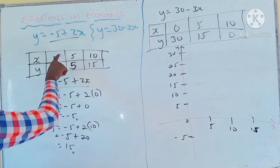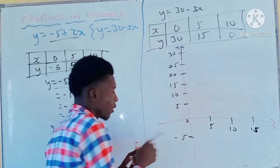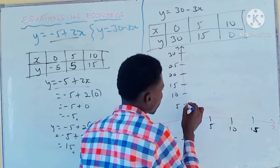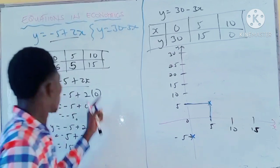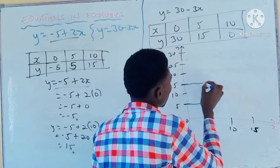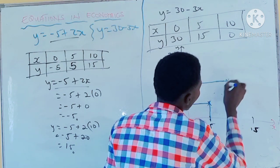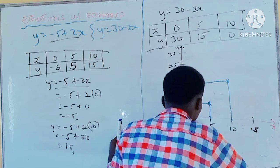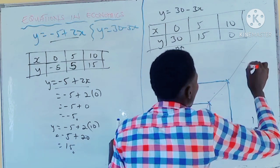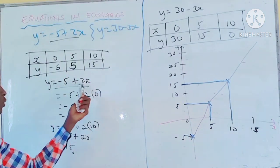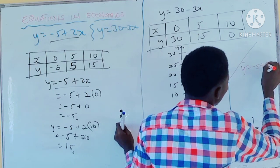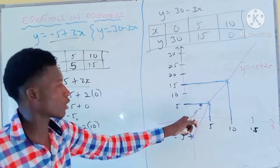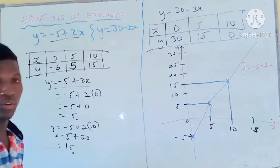For the first equation: when x is 0, y is minus 5 — plot that point. When x is 10, y is 15 — plot that point around 15 on the y-axis. Rule your line through those points. This graph is called y equals minus 5 plus 2x. Don't forget to name your graph — it is very important, especially on graph sheet.